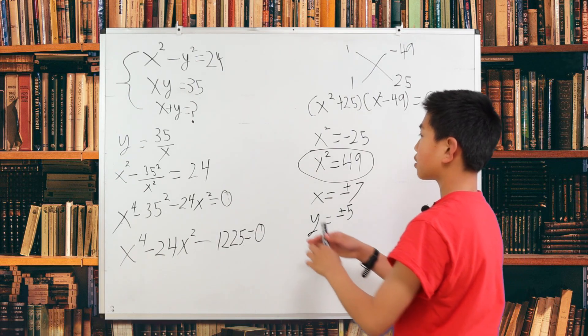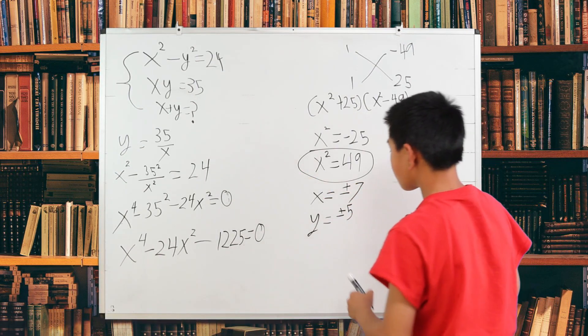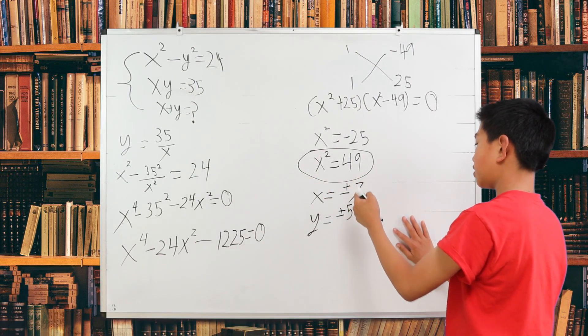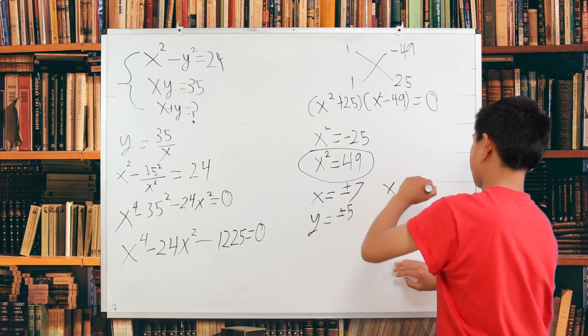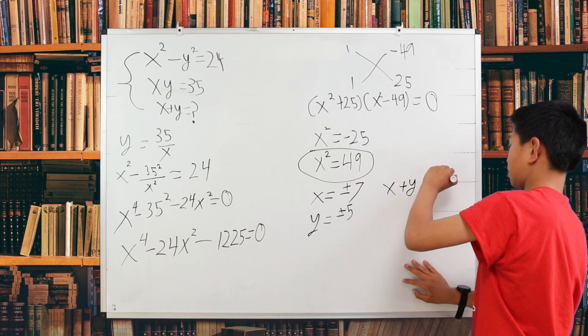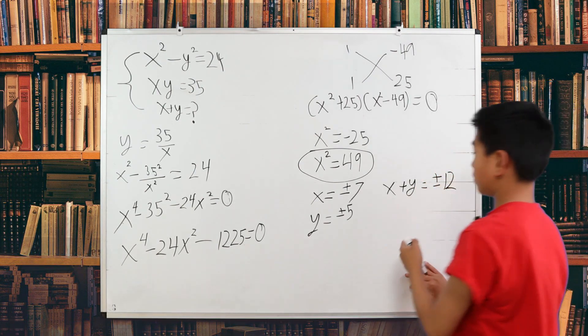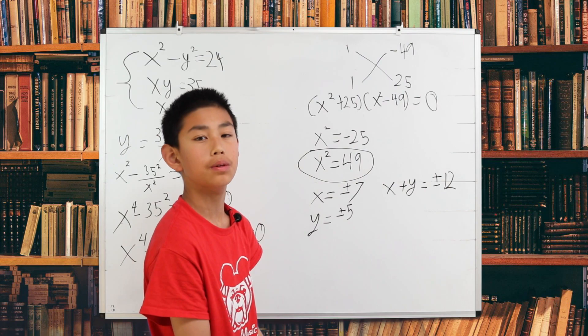So what x plus y is, since it's positive or negative, x plus y is equal to positive or negative 12. Right there. And that is the first way of solving this problem.